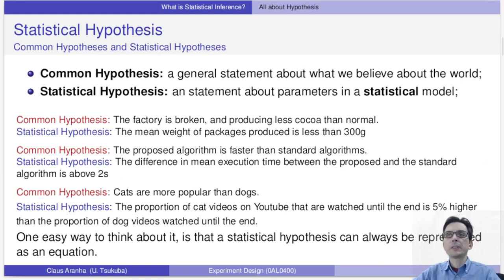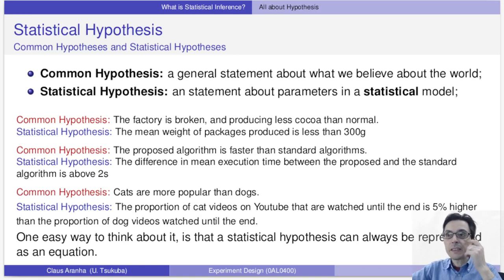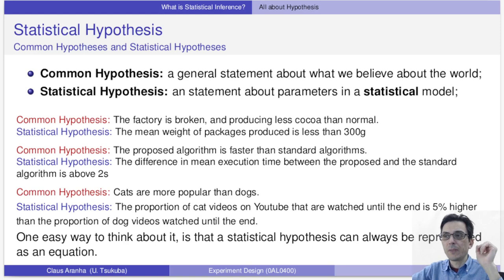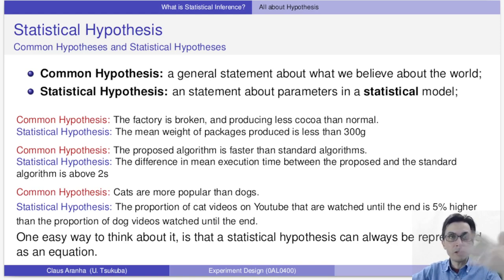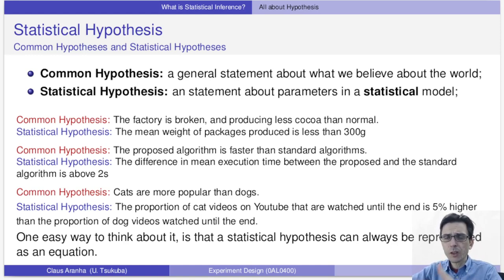It's important that we spend a little more time talking about how we use the word hypothesis. Hypothesis is a word that people use a lot because it feels serious and scientific, but it's a word with a very specific meaning and it's important that we use it correctly. I want to separate a common hypothesis — which is a statement about the world in general — versus a statistical hypothesis, which is a statement about a statistical model of the world.